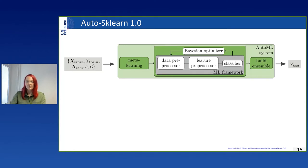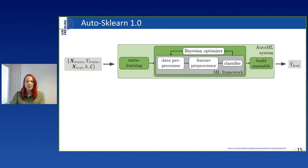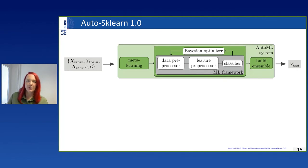We discovered two shortcomings. First, meta-features are quite expensive to compute, and we need them to find the nearest datasets for warm starting. Second, large datasets can be an issue since it can be too expensive to evaluate even a single model. I'll describe our approach to tackle these.